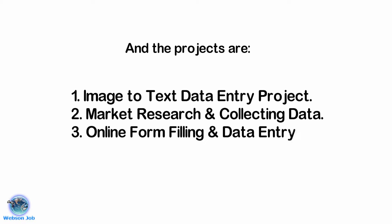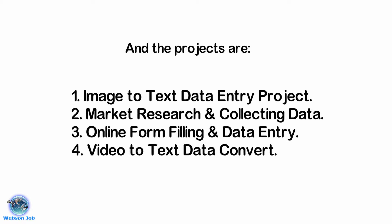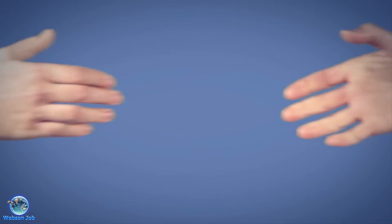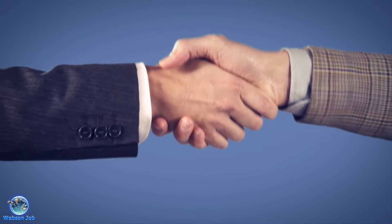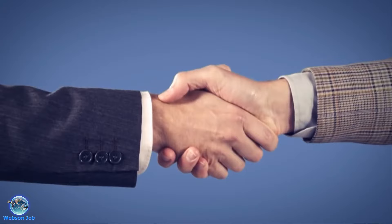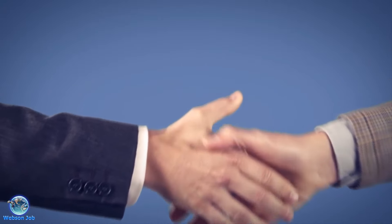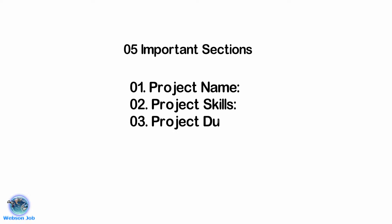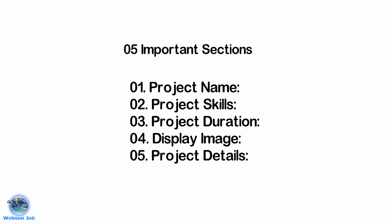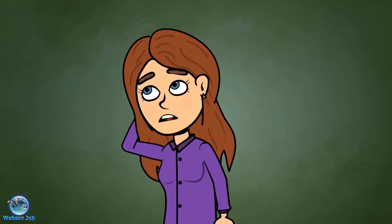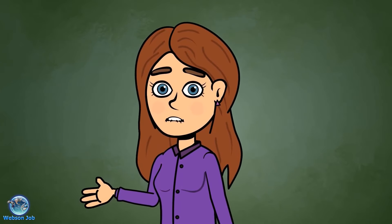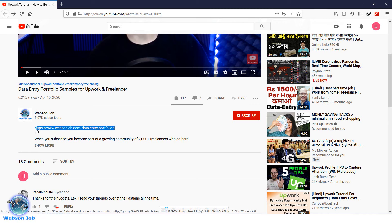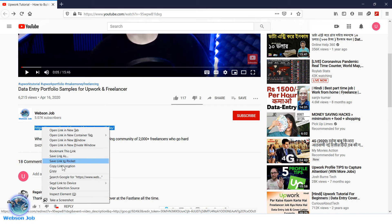The projects are: image to text data entry, market research and collecting data, online form filling and data entry, and video to text data conversion. I believe this portfolio will create a positive impression on clients and push them to click the hire button. To create a portfolio you need five important sections: project name, project skills, project duration, display image, and project details. If you do not have any idea about these sections, go to the description box and follow the post link.